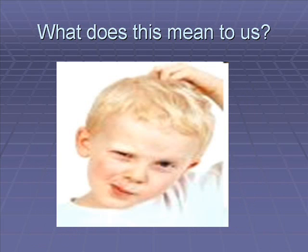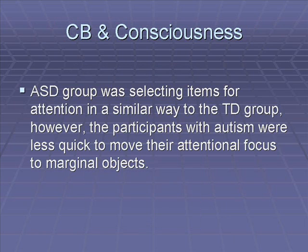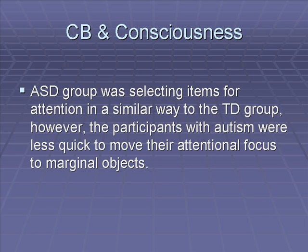So what does all of this mean? The autistic group was selecting items for attention in a similar way to the typically developing group. However, participants with autism were less quick to move their attentional focus to marginal objects. This may reflect a difficulty in disengaging attention from those central items initially selected, or in shifting attention between items.